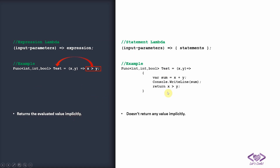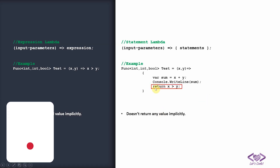On the other hand, in a statement lambda you have input parameters and on the right side instead of an expression you have curly braces, and inside that you can have one or multiple statements. You can do a sum, print to console, or have any number of lines. The difference here is it does not return any value implicitly unlike the expression lambda. If you want to return any value you will have to use the return keyword explicitly.